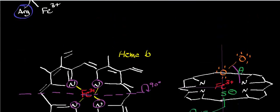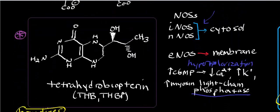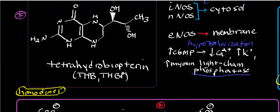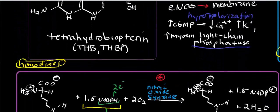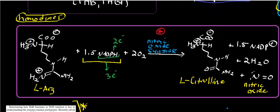The mechanism and total reaction: nitric oxide synthase uses three electrons from NADPH, L-arginine, and two molecular oxygens, and produces citrulline and nitric oxide.